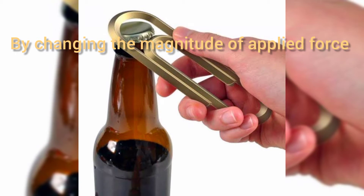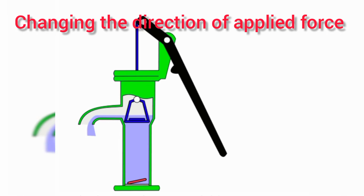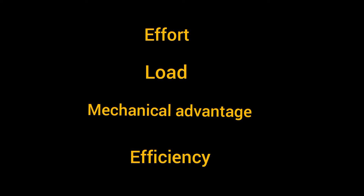The opener is a force multiplier machine. In some situations, it is more convenient for us to apply force in a particular direction than in any other. For example, a change in the direction of the applied force takes place when underground water is pulled out with the help of a hand pump, as shown here. Now let us learn some terms related to machines.